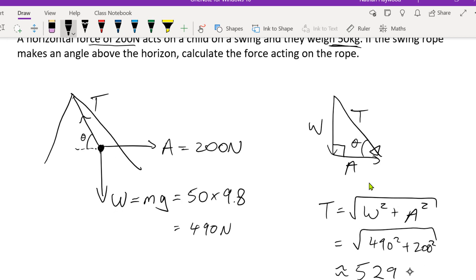529 Newtons. How many decimal places? Two decimal places: 529.28. So that's the force acting on the rope or the chain or whatever type of swing you have.